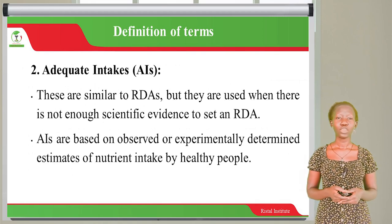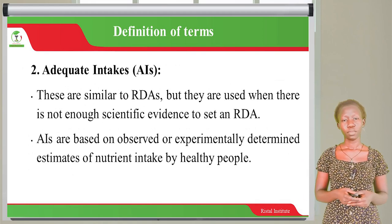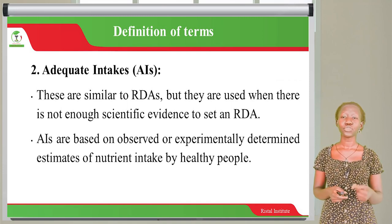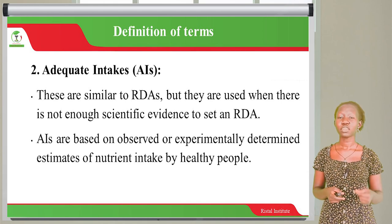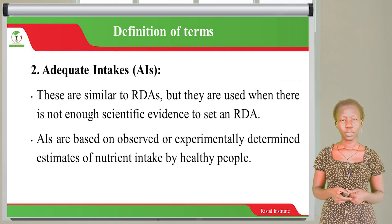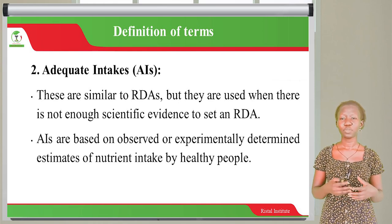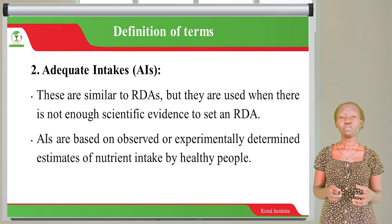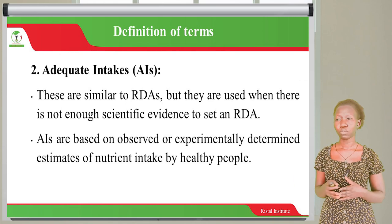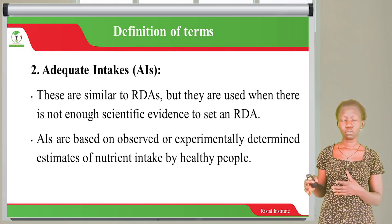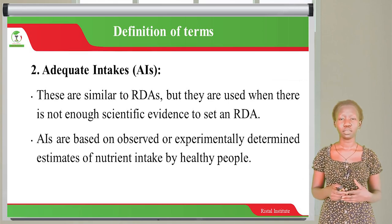The second term is Adequate Intake. These are similar to RDAs, but the difference is that they are used when there is not enough scientific evidence to set an RDA. They are based on observed or experimentally determined estimates of nutrient intake by healthy people. All of these recommended food intake levels are based on healthy people; when somebody is sick, the levels will be different.